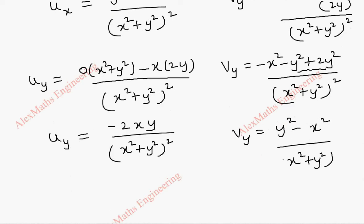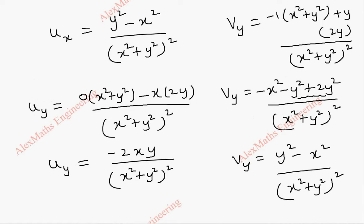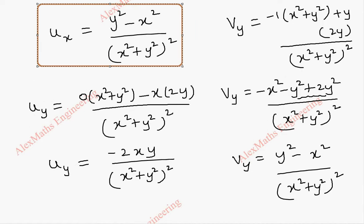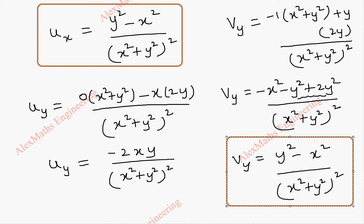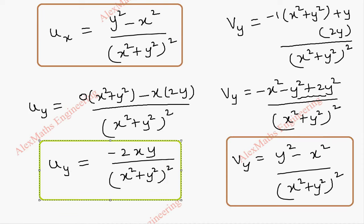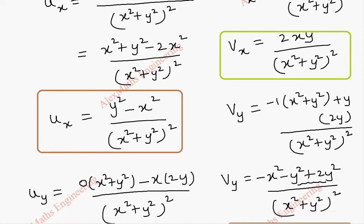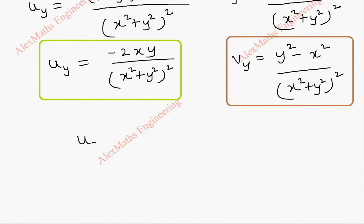We have now completed all the partial derivatives. We check whether they satisfy the CR equations. ux = (y² - x²)/(x² + y²)² and vy = (y² - x²)/(x² + y²)², so ux = vy. Also, uy = -2xy/(x² + y²)² and vx = +2xy/(x² + y²)², so uy = -vx. Therefore, the CR equations are satisfied.